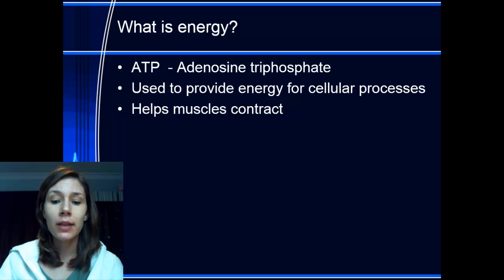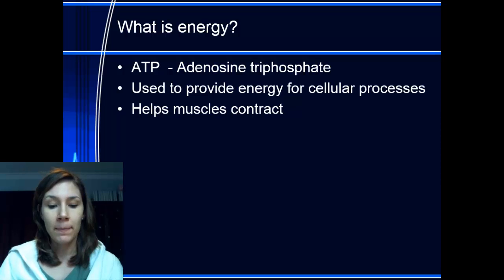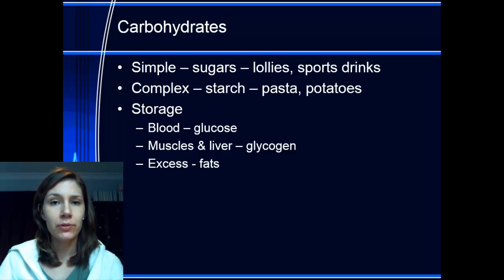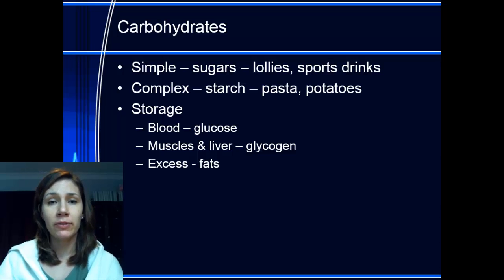three phosphate molecules. When one of those phosphate molecules breaks off, it releases energy, and that's what provides the source of energy for a muscular contraction. When you need to make more ATP — because your muscles only store about two seconds worth — you rely on different fuels, and carbohydrates is one of the main ones during aerobic and